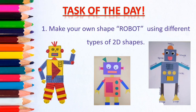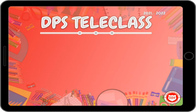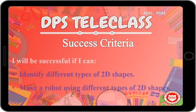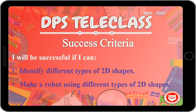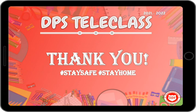After finishing your work, you have to send it to me through Viber. I hope you all got it. Let's recall our success criteria: you will be successful if you can identify different types of 2D shapes and make a robot using different types of 2D shapes. That's all for today's lesson. I hope you all have enjoyed it — stay safe, stay home, bye bye!